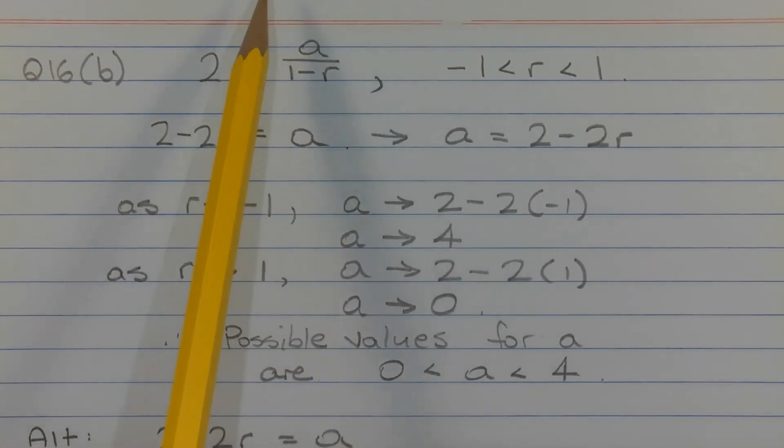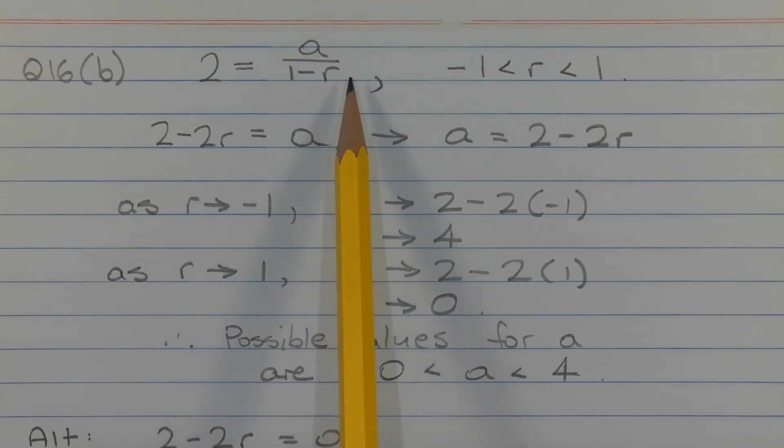Starting with the limiting sum formula, that is the limiting sum is equal to A over 1 minus R, where A is the first term of the geometric series and R is the common ratio. We're given that the limiting sum is equal to 2. So 2 is equal to A over 1 minus R.